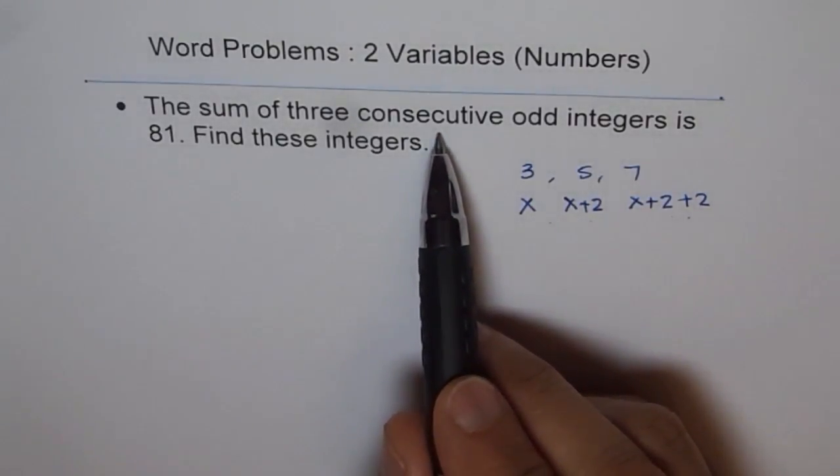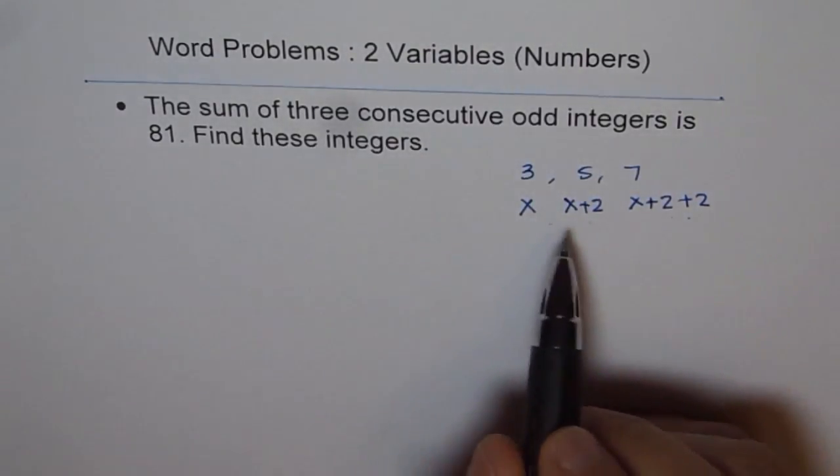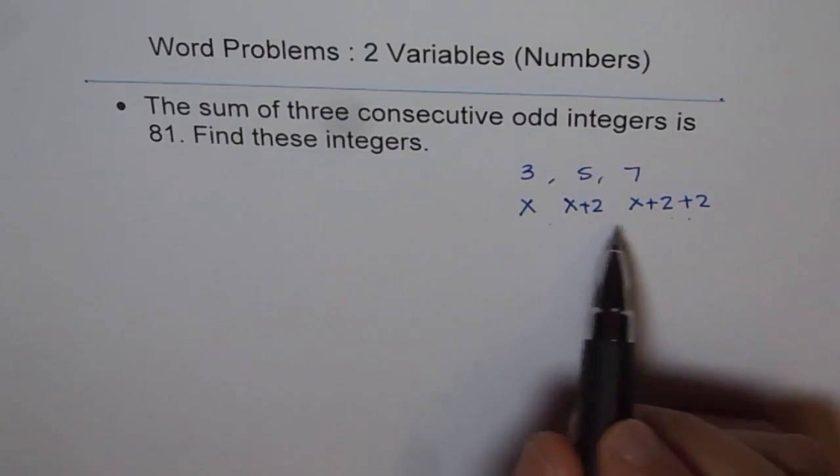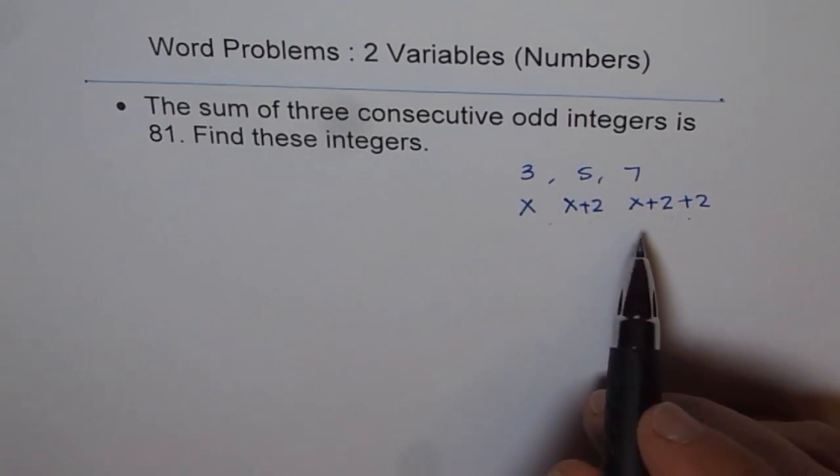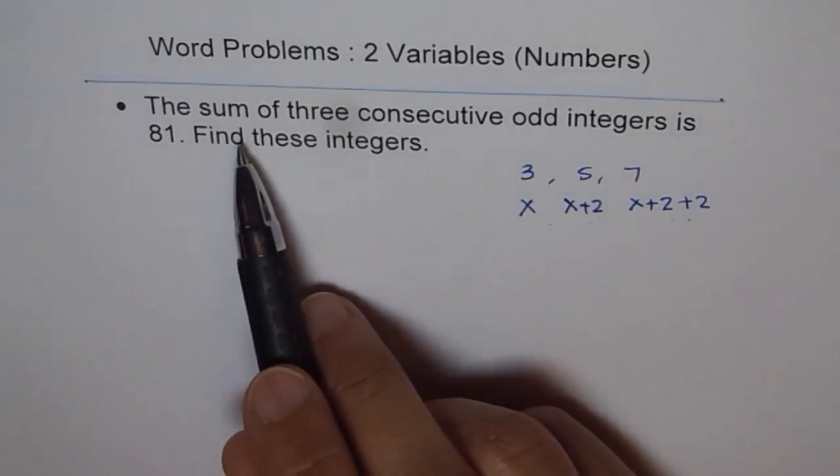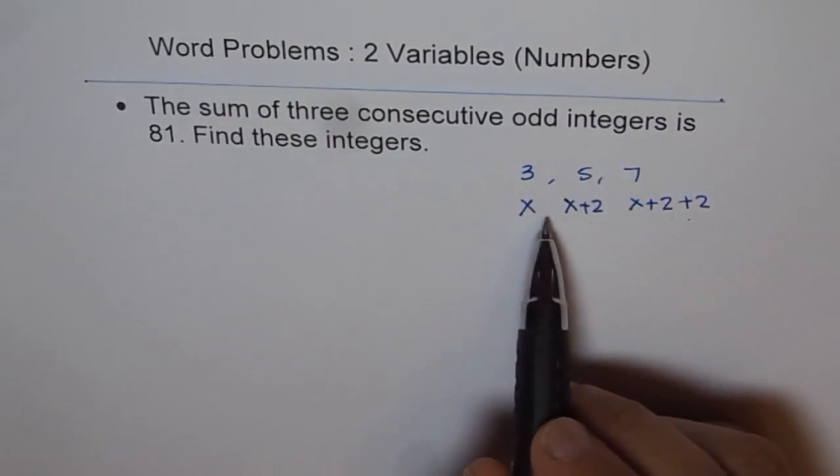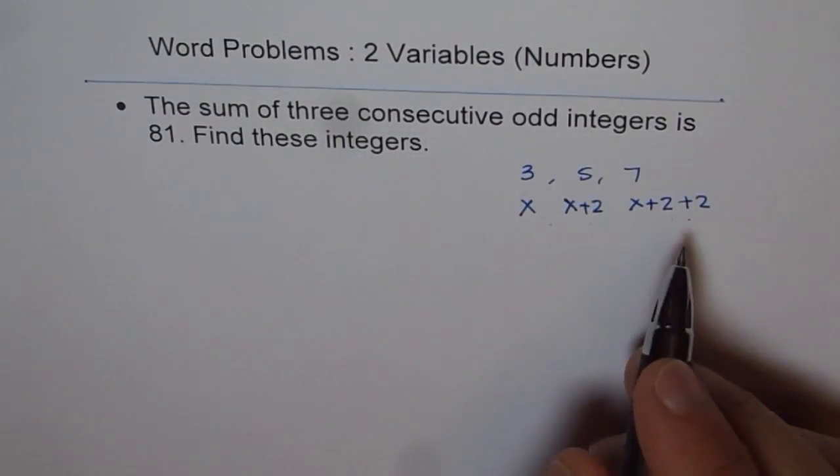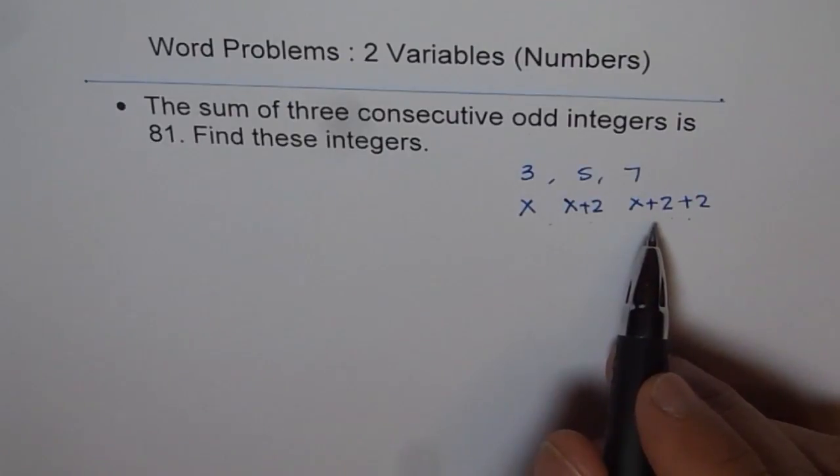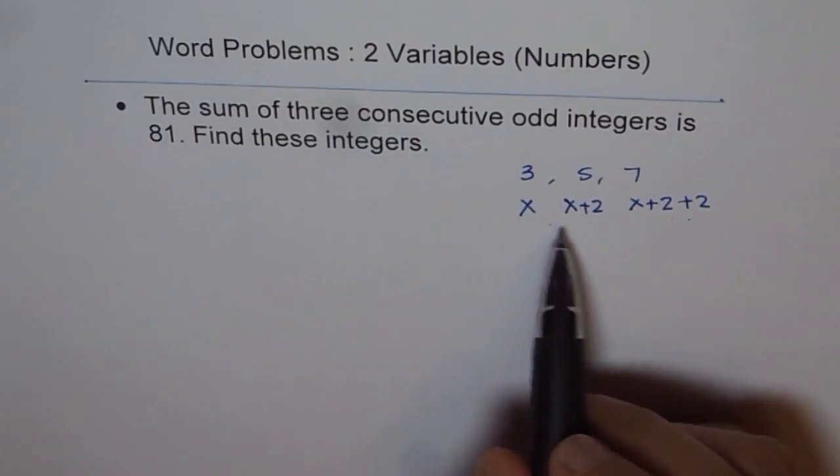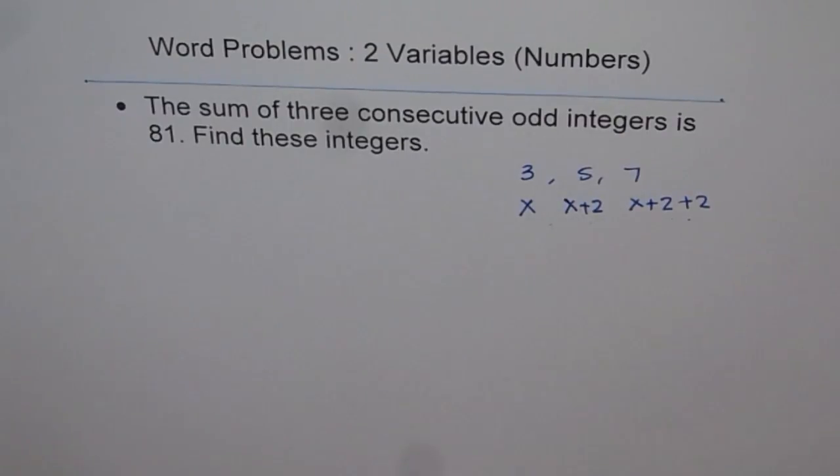These integers in a sequence are called consecutive. So numbers which come in a sequence are consecutive numbers - that is the basic understanding. One way could be you could say three consecutive integers are x, y, and z - three variables - then the problem becomes very difficult to solve.